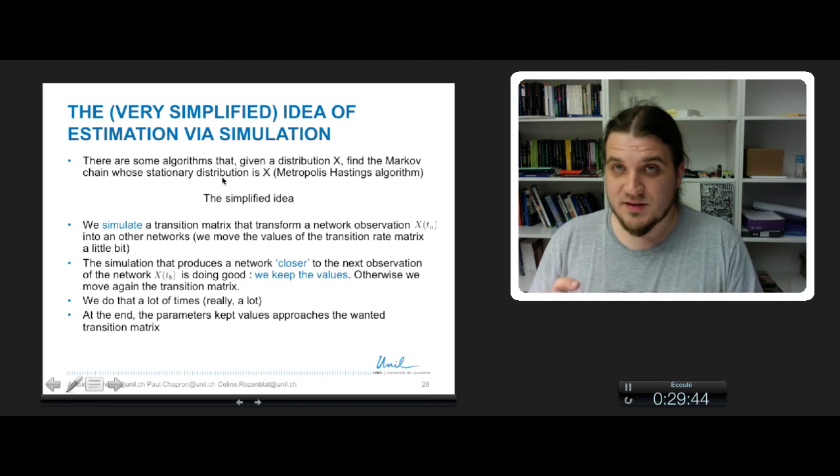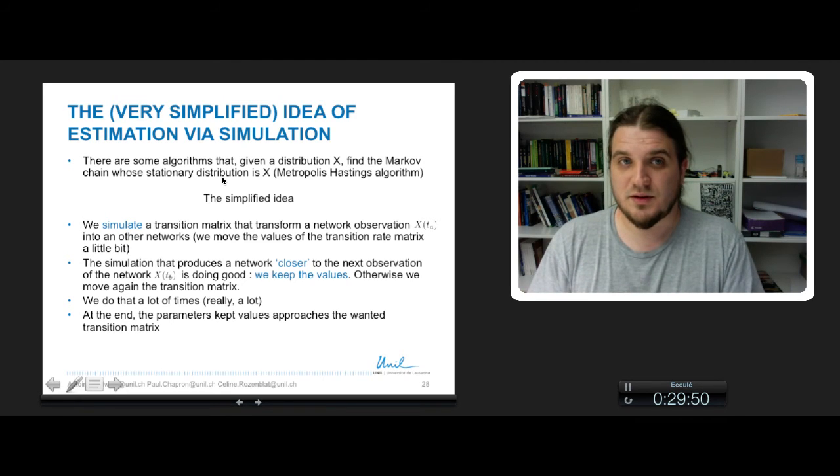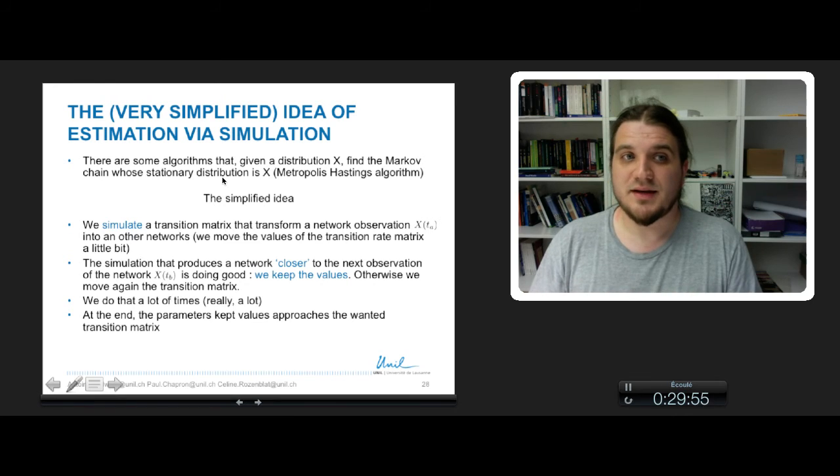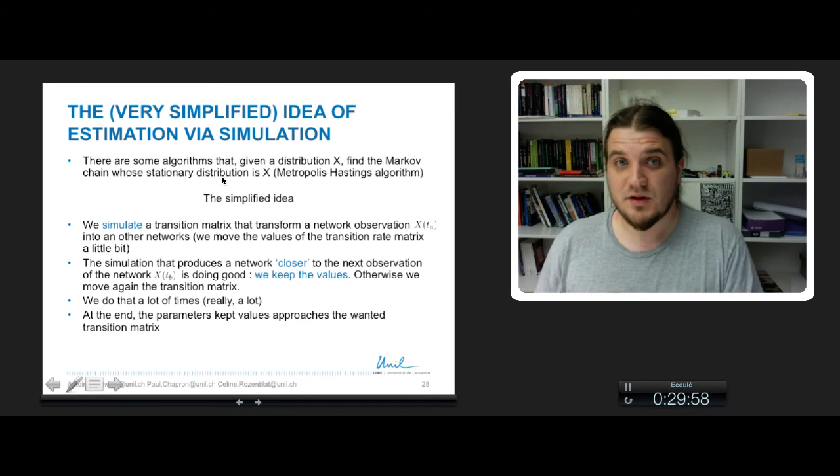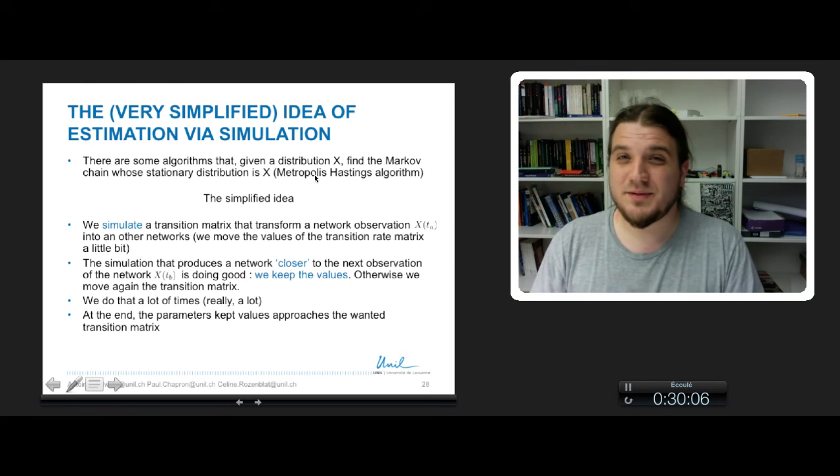So the idea is to reverse the idea of stationary distribution and trying to construct the Markov chain that will have as stationary distribution one of our observations of networks. So this algorithm will find the Markov chain that produces our observation.